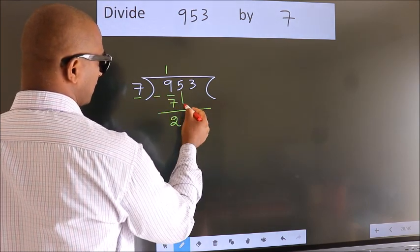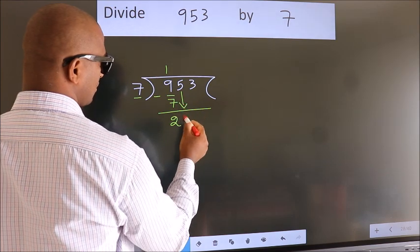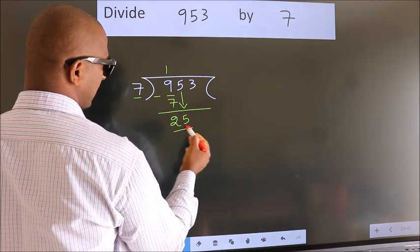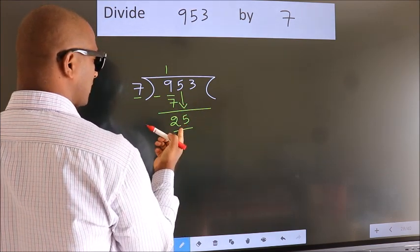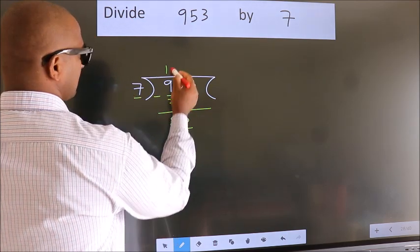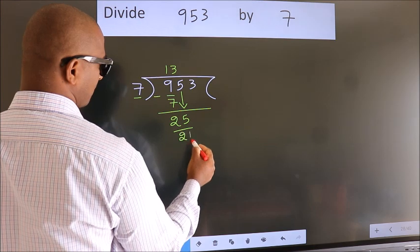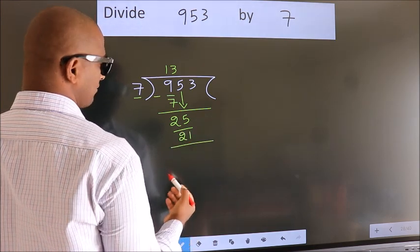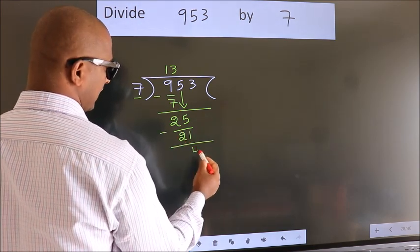After this, bring down the beside number. So, 5 down. So, 25. A number close to 25 in 7 table is 7, 3 is 21. Now, we subtract. We get 4.